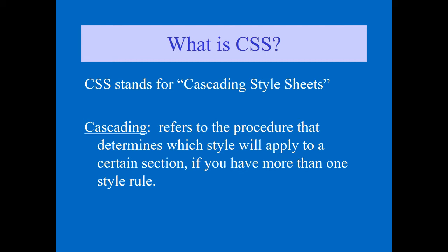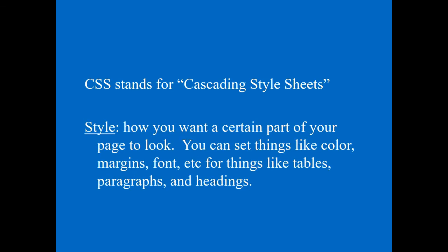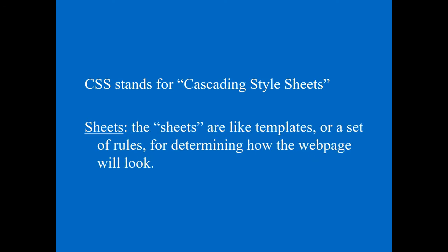The style is how you want a certain part of your page to look. You can set things like color, margin, font, anything — like a table, paragraphs, and headings. That all comes under the meaning of style. Sheets are like templates or a set of rules for determining how the web page will look.